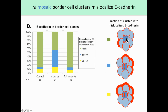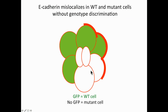I quantified how often I see larger portions of the periphery with mislocalized E-cadherin, and found that mislocalized E-cadherin around the periphery occurs most often in mosaic clusters, but not in full mutant clusters. Interestingly, the E-cadherin mislocalizes not just over the mutant cells, but also over the wild-type cells. This tells us the E-cadherin mislocalization phenotype is dependent on the identity of the entire cluster as a whole being mosaic, not on the individual genotype of the cells.